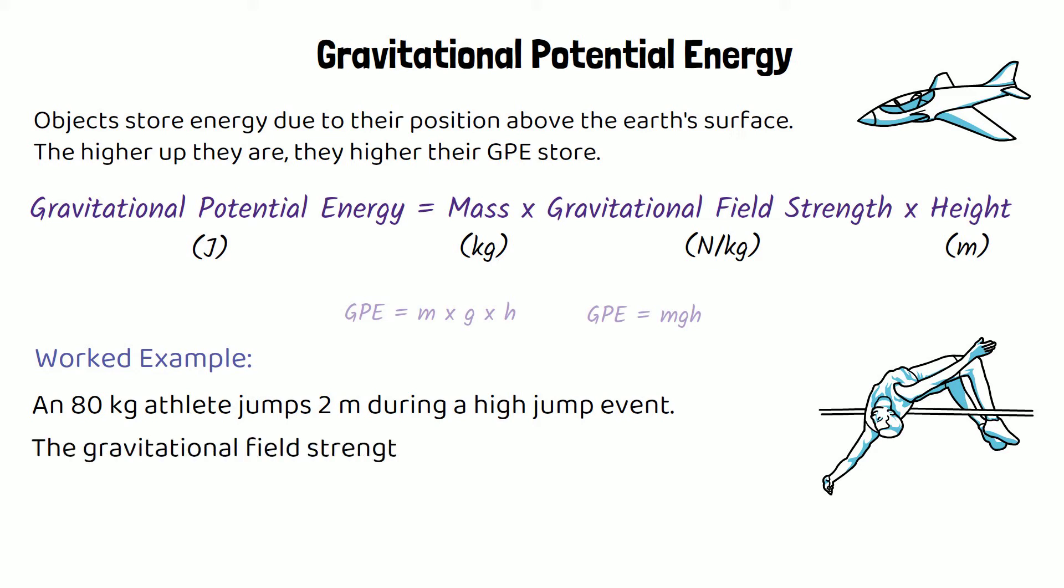The gravitational field strength on earth is 10 newtons per kilogram. It's actually 9.81 newtons per kilogram, but you just need to use the GFS that they give you in the question. They will tell you which value they want you to use. So using that information, calculate the athlete's gravitational potential energy.